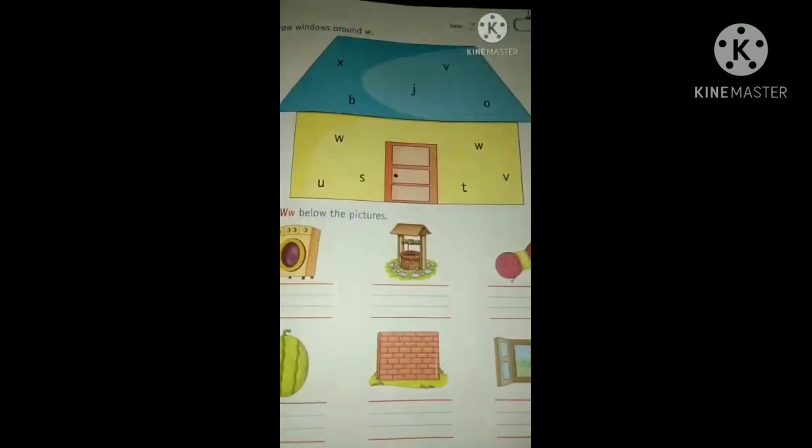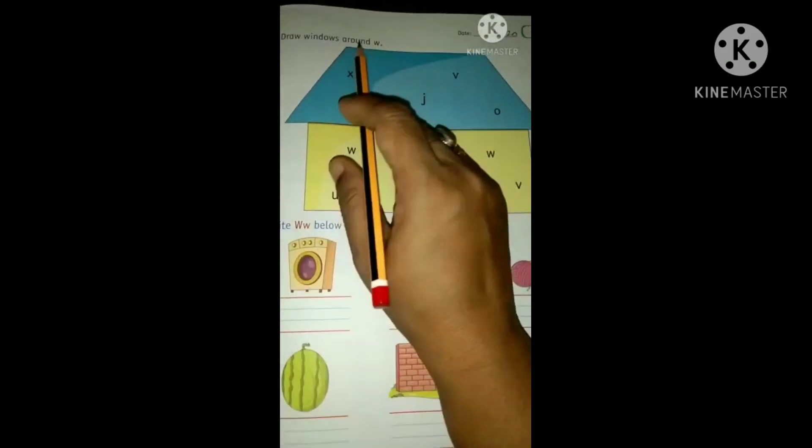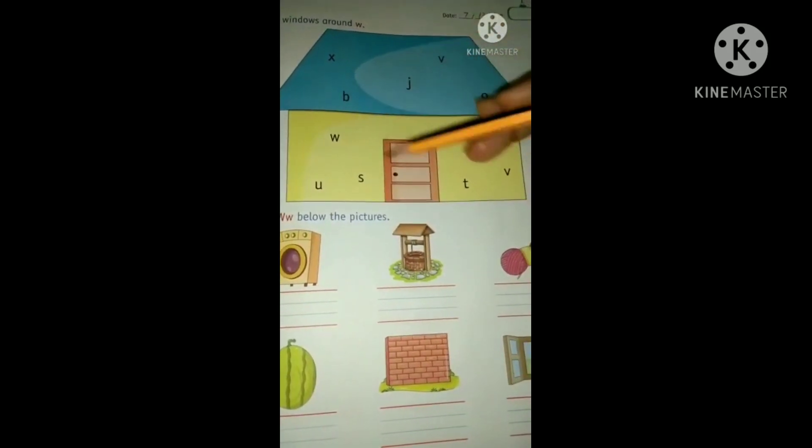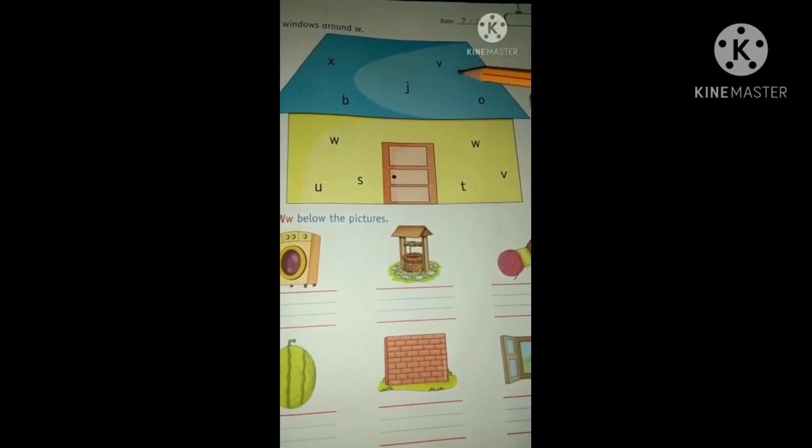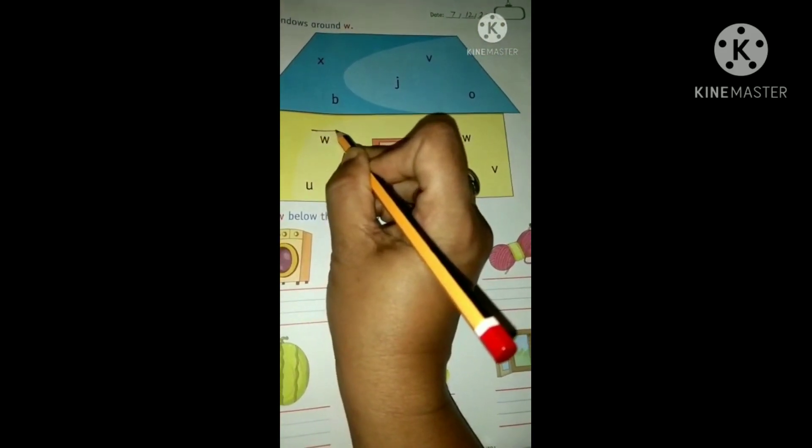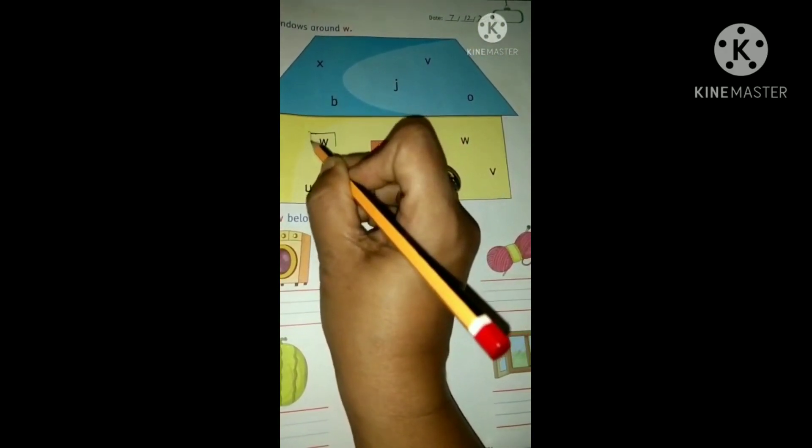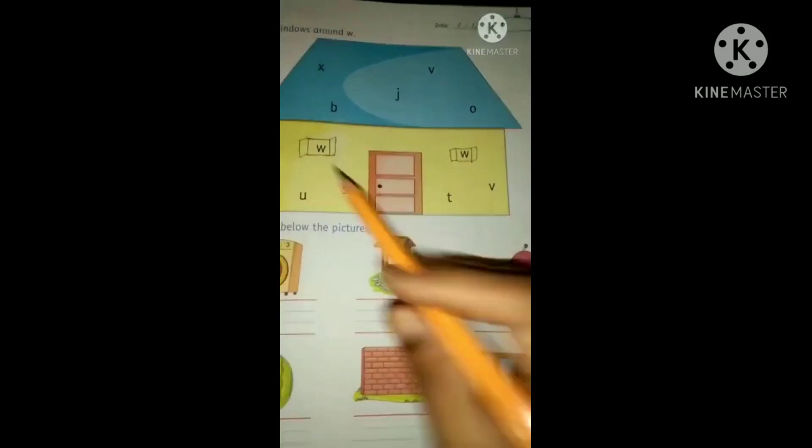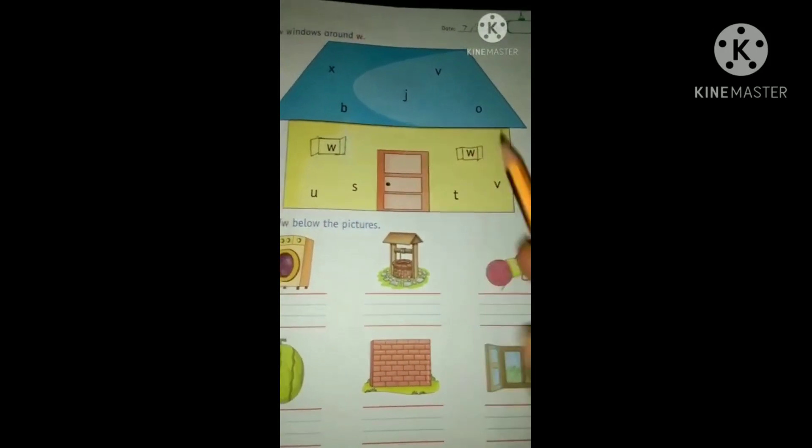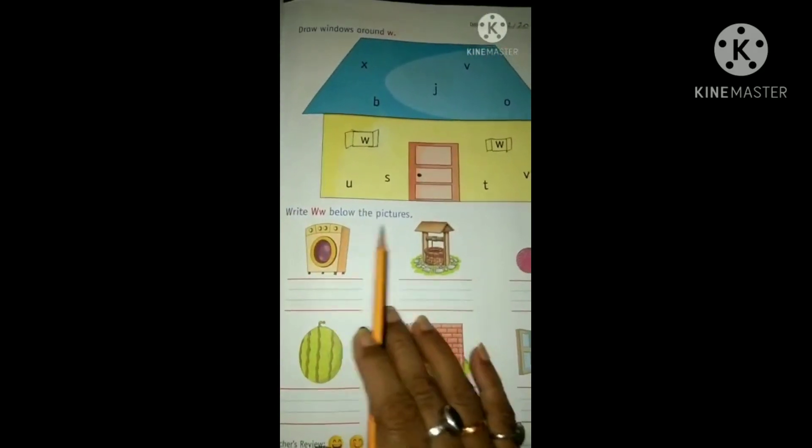Now see on the next page. Draw windows around W. So we have to find out. First find out, letter W sits here. So we will draw windows. Draw windows in these two W's.